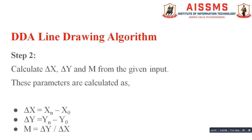Our next step is to calculate delta x, delta y, and slope m from the given input. The formula to calculate delta x is xn minus x0, where xn is the x-coordinate of the ending point and x0 is the x-coordinate of the starting point. The formula to calculate delta y is yn minus y0, where yn is the y-coordinate of the ending point and y0 is the y-coordinate of the starting point. The slope m is calculated by the standard formula: delta y divided by delta x.